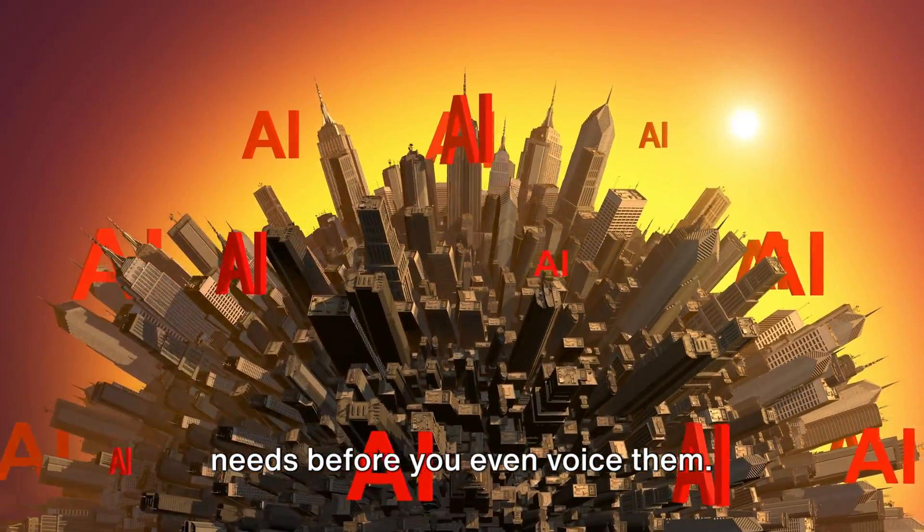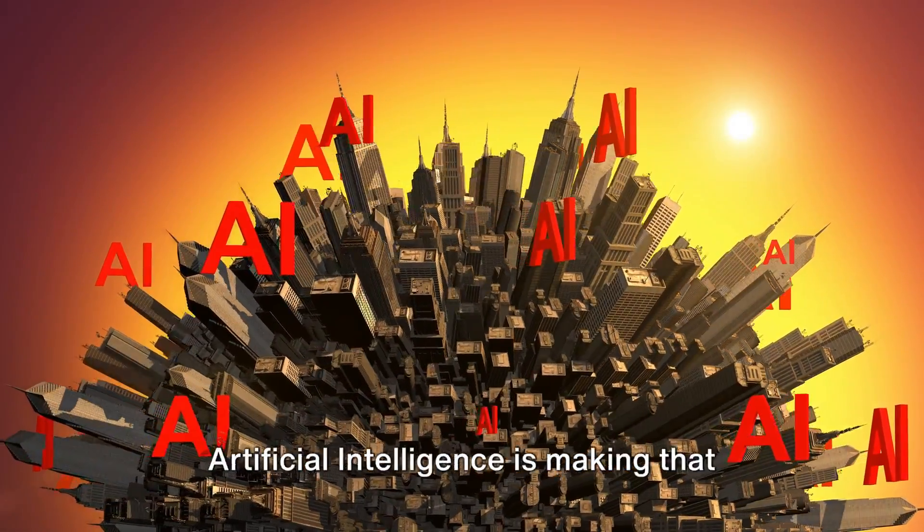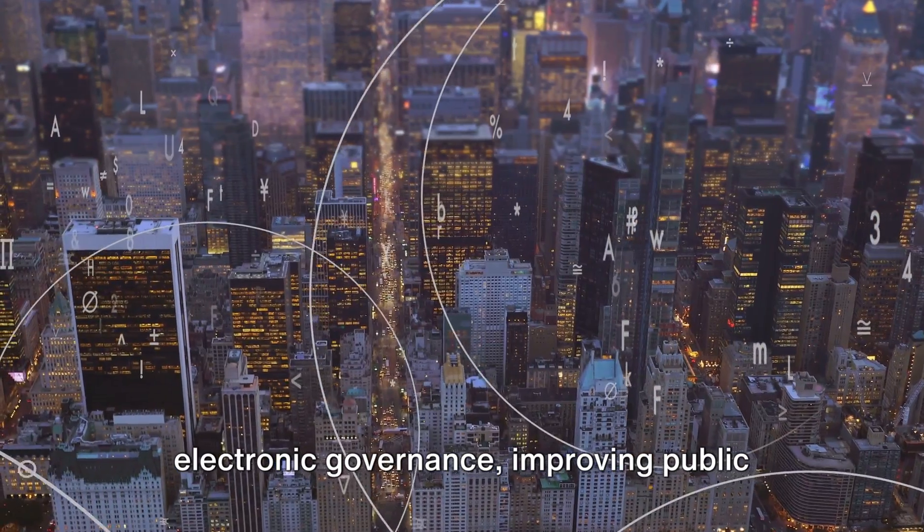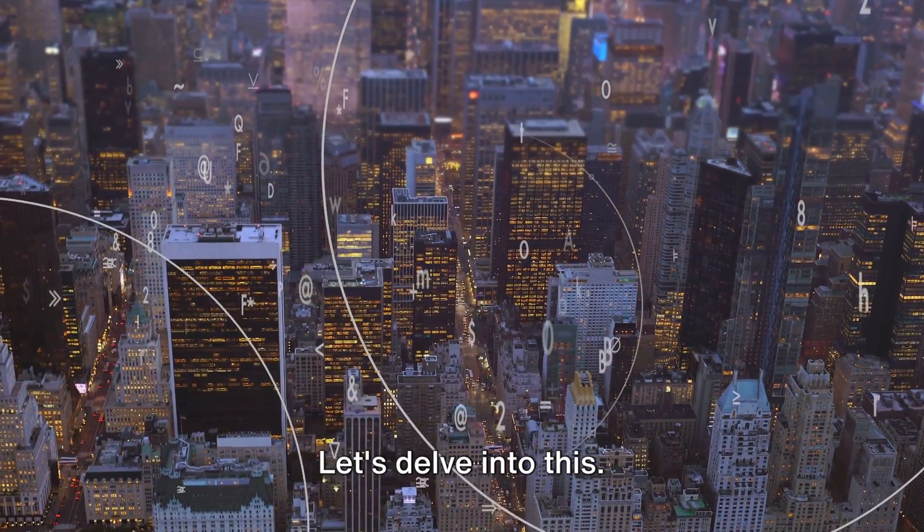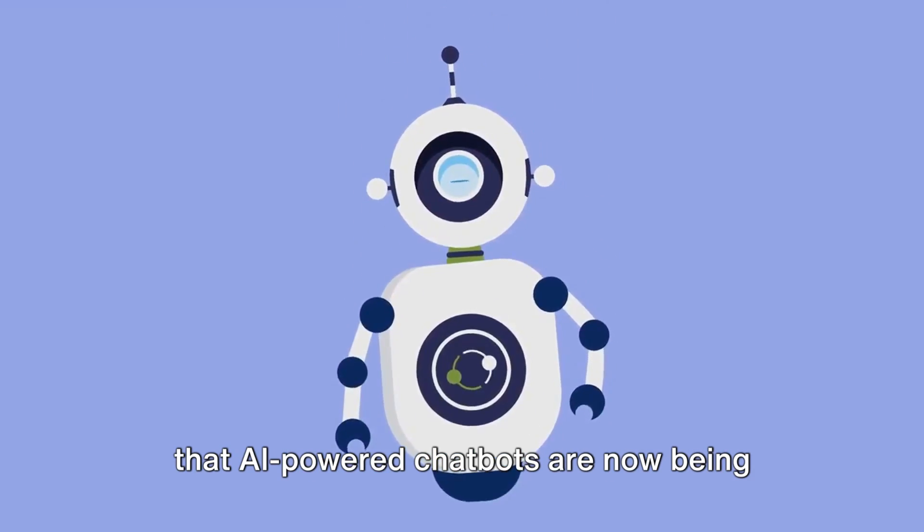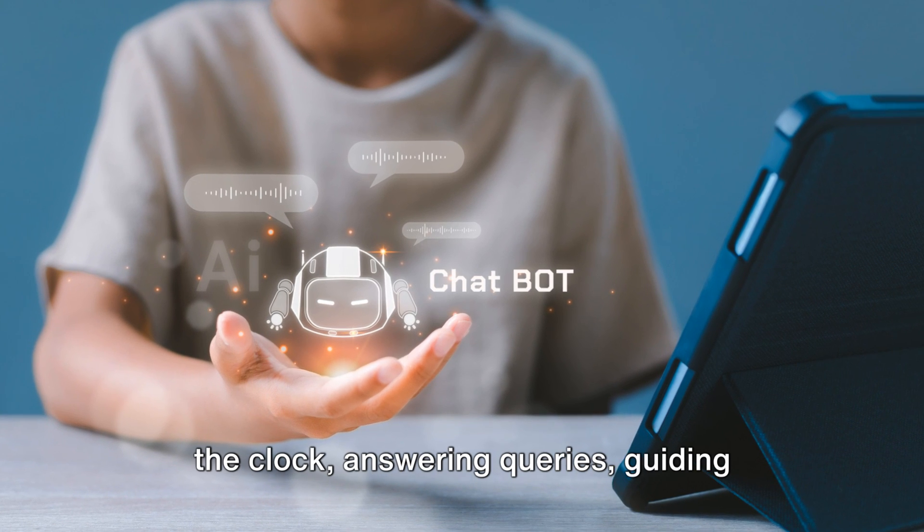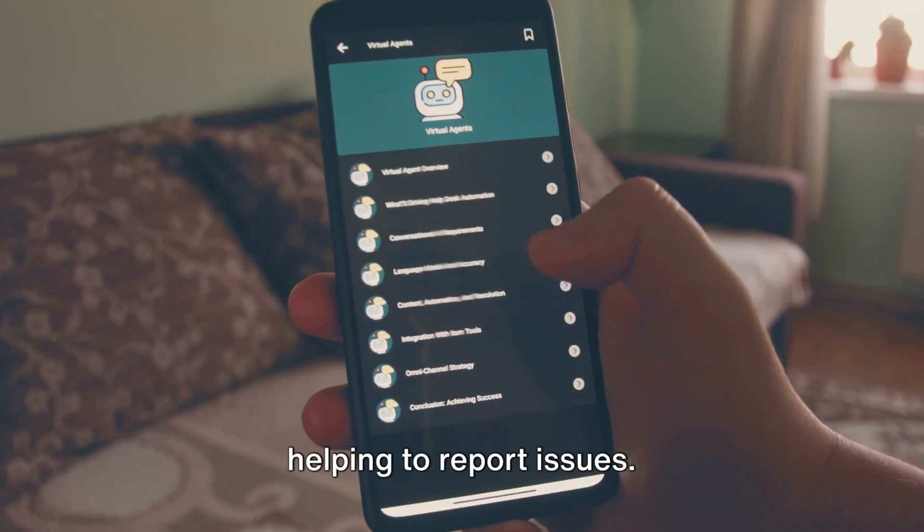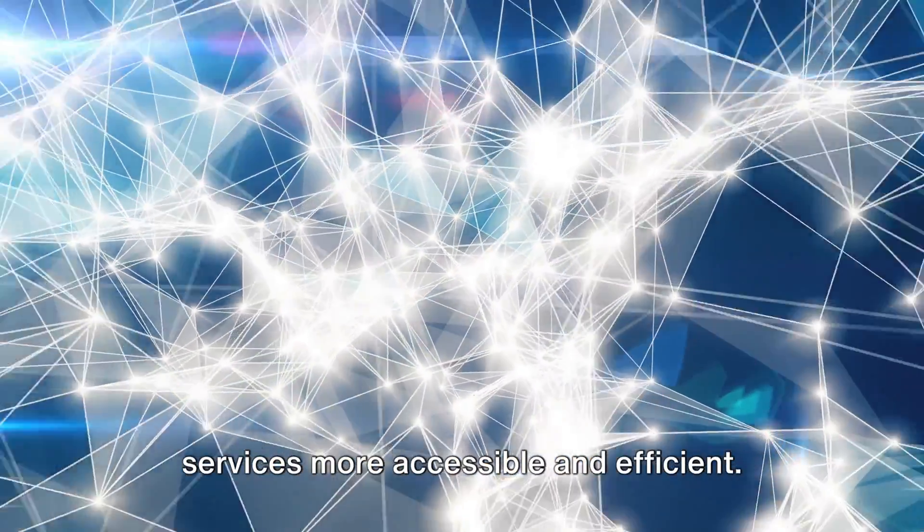Imagine a government that predicts your needs before you even voice them. In our world, where technology is changing the face of operations, artificial intelligence is making that vision a reality. It's transforming the sphere of electronic governance, improving public services, and making governments more responsive and accountable. Let's delve into this. You've probably interacted with a chatbot at some point, right? But did you know that AI-powered chatbots are now being used to provide citizen services? These virtual assistants are available around the clock, answering queries, guiding users through complex procedures, and even helping to report issues. They're revolutionizing the way we interact with our governments, making services more accessible and efficient.